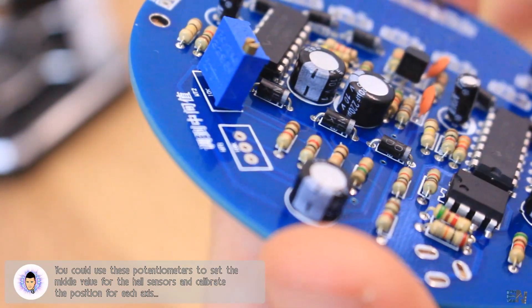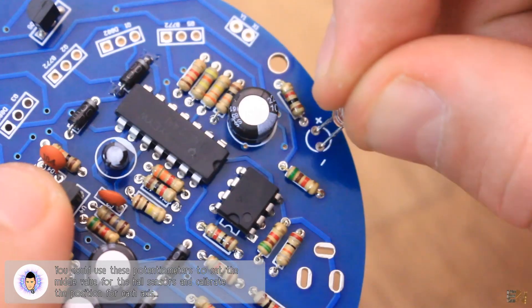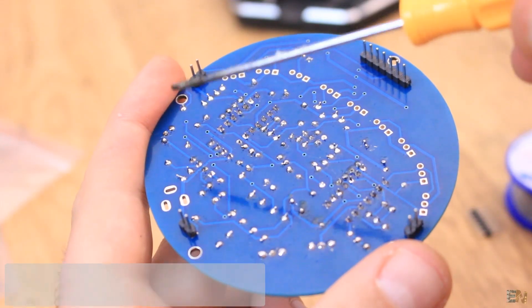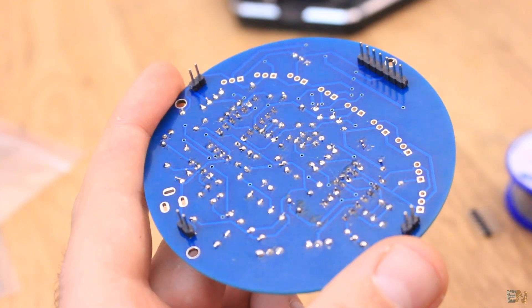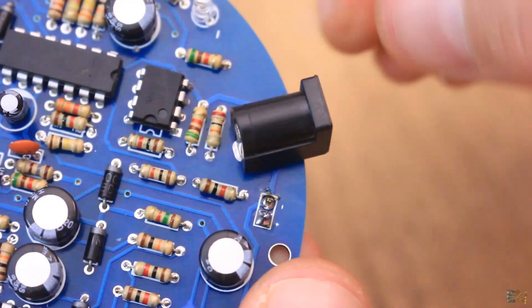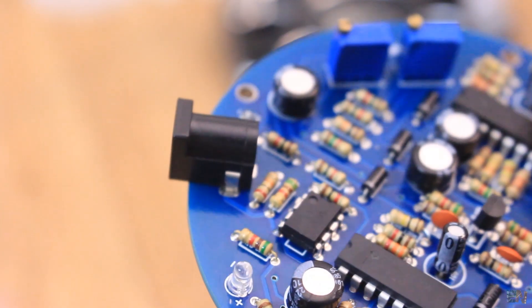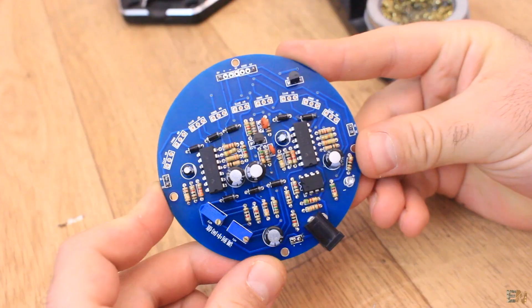Now I add the two 10K potentiometers. Finally I solder the small LED and the male pins on the other side of the PCB that will be used to connect both PCBs together. I also solder the DC connector. All components except the male pins must be soldered on this side of the PCB, the one with the silk layer.